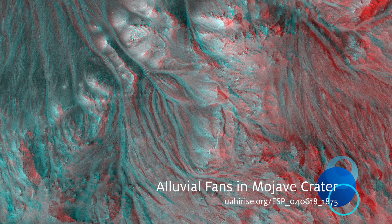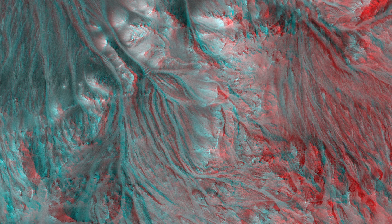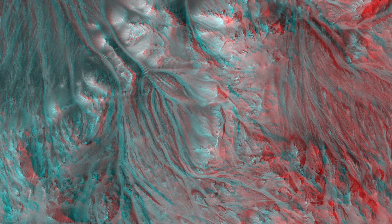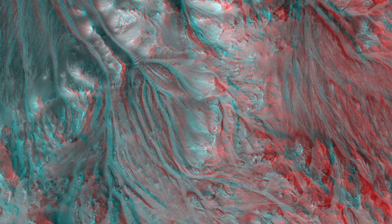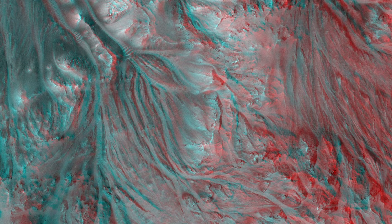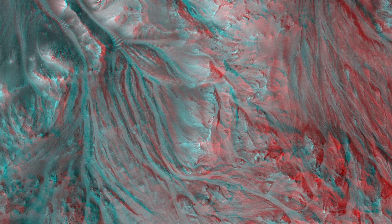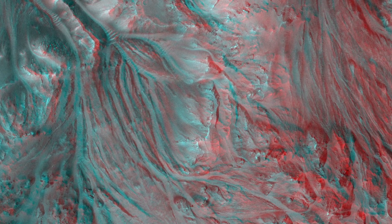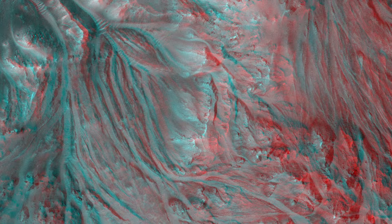Stereo data from an anaglyph or 3D image shows that the landscape in this observation of Mojave Crater is pervasively eroded right up to the tops of the ridges, with channels extending down into depositional fans — much like alluvial fans in the Mojave Desert.